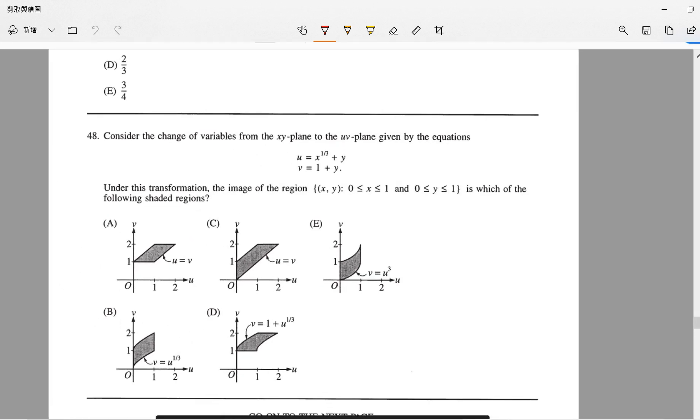Basically a change of variable says that u equals x to the 1/3 plus y and v is 1 plus y, and x is from 0 to 1 and y is from 0 to 1.